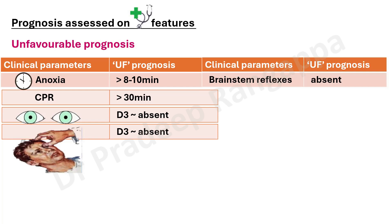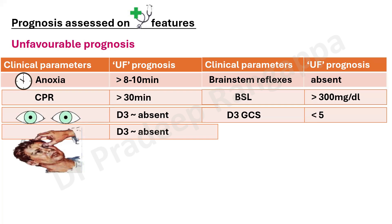Absent brainstem reflexes are also associated with poor prognosis. Blood sugar level greater than 300 mg/dL at admission has been shown to indicate poor prognosis. And at day 3, GCS less than or equal to 4 — although some studies use less than 5 — is conclusively associated with bad outcome. So remember: pupillary light reflex at day 3, motor response to pain, and GCS less than 4 at day 3 are the three most important clinical markers confirmed by multiple subsequent studies.